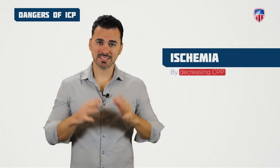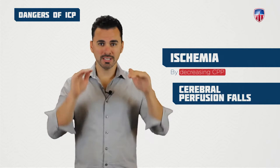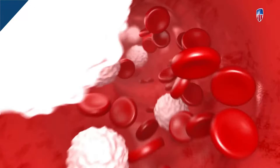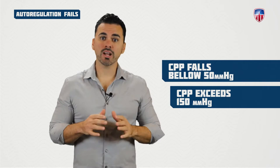As ICP approaches mean arterial pressure, cerebral perfusion falls. The body responds by raising blood pressure and dilating cerebral blood vessels, which increases cerebral blood volume, further worsening ICP and starting a vicious cycle that lowers CPP even further. The brain has an intrinsic ability to autoregulate — cerebral autoregulation — where blood vessels constrict and dilate in response to environmental changes. This mechanism fails when CPP falls below 50 or exceeds 150 mmHg, which is decompensation.